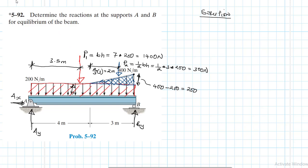So with this, we can now take moments about point A. So summation of moments about point A, which is equal to 0. About point A, clockwise is positive.